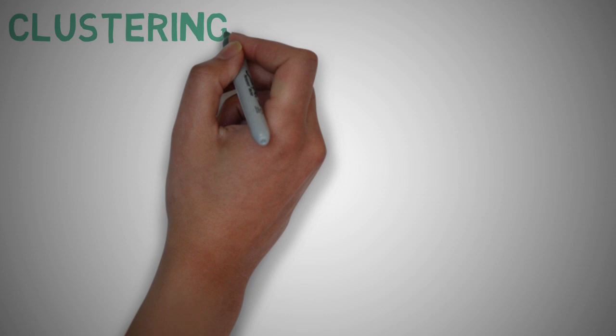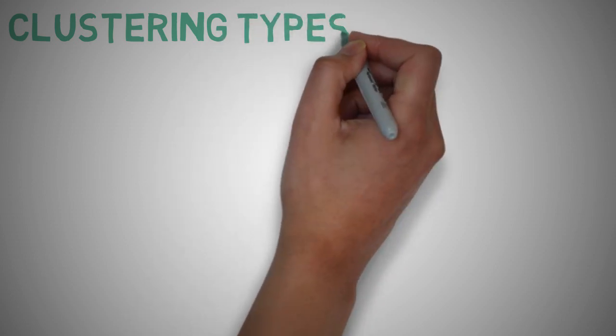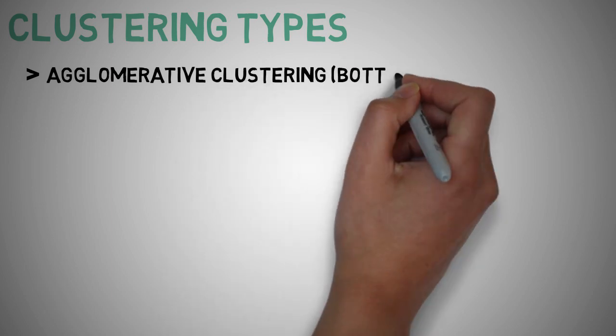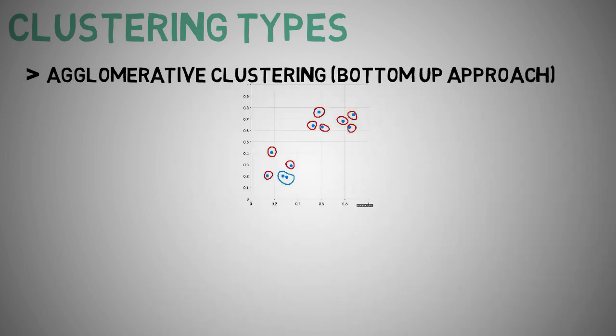So there are two main approaches with the HCA algorithm. They are agglomerative clustering which is a bottom up approach that we performed in our previous two examples. So starting with each item as its own cluster, we find the best pair to merge into a new cluster. And then we repeat until all clusters are fused together.